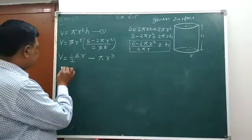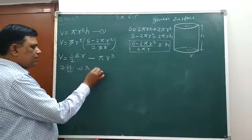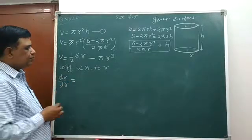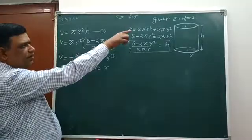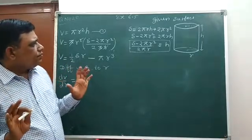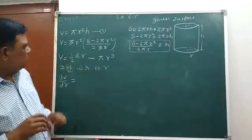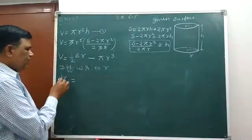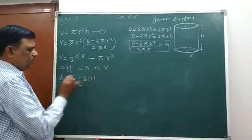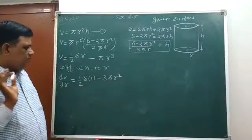Differentiate with respect to r. dV/dr equals, S is constant because it is given, means we have already a sheet to make this cylinder. When sheet is fixed, then surface area will also be fixed. dV/dr equals 1 upon 2 S and differentiation of r is 1, minus 3πr².